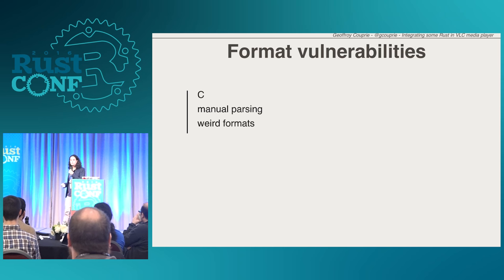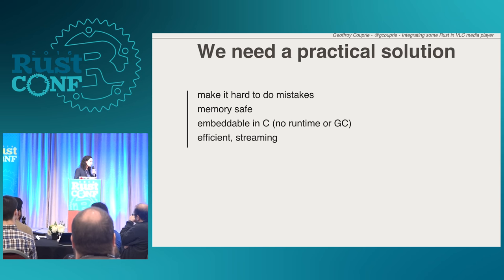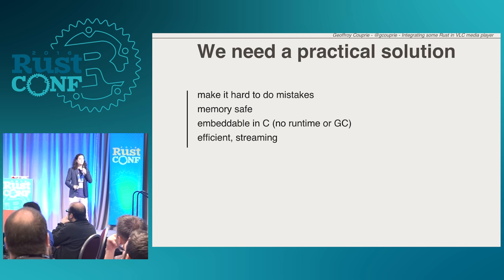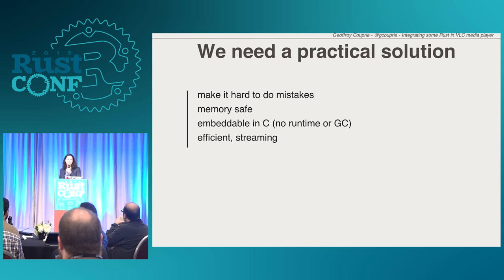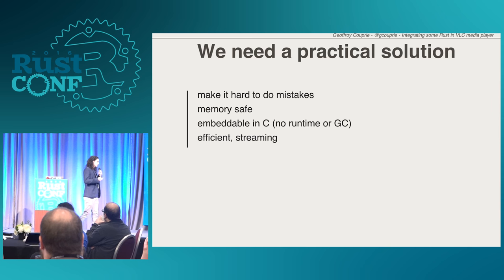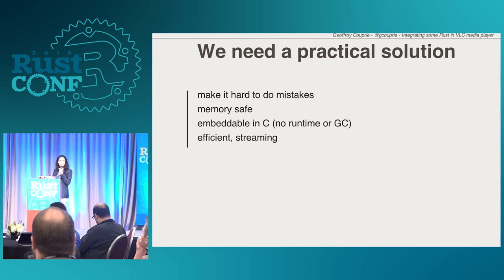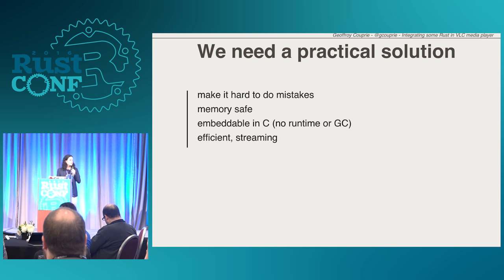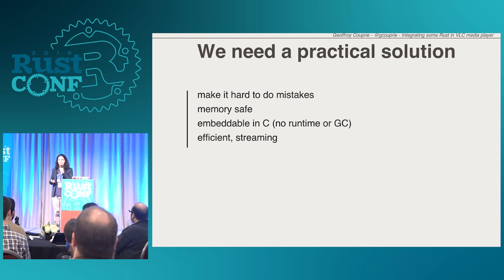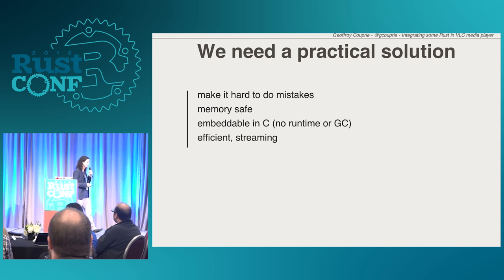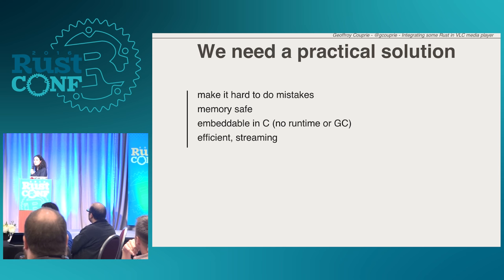So, two years ago I set out to find some way to fix that. I had some requirements: it should be easy to write a parser correctly, because it's a nightmare to maintain and test that kind of code. It should be memory safe. It should be easy to embed in C. One of my first suggestions was, let's do some Haskell — and then they took a look at the runtime and said, no way. No garbage collection. We don't want that inside VLC.